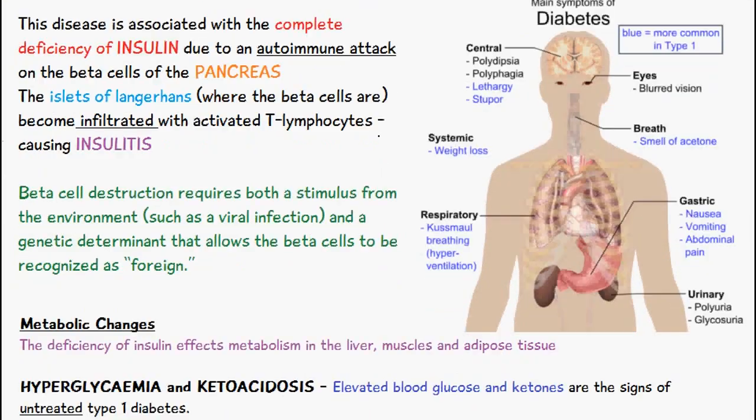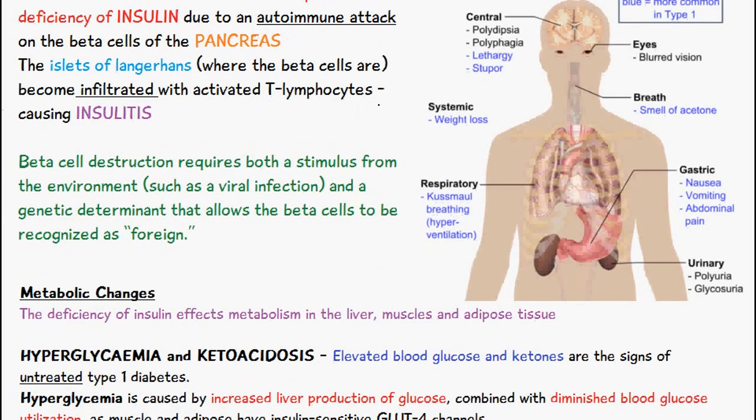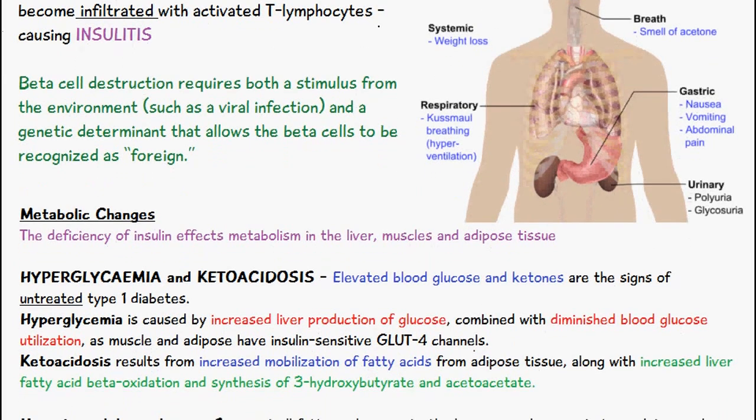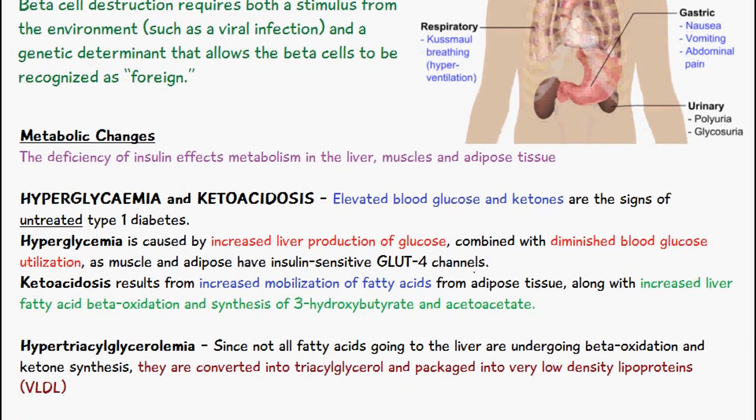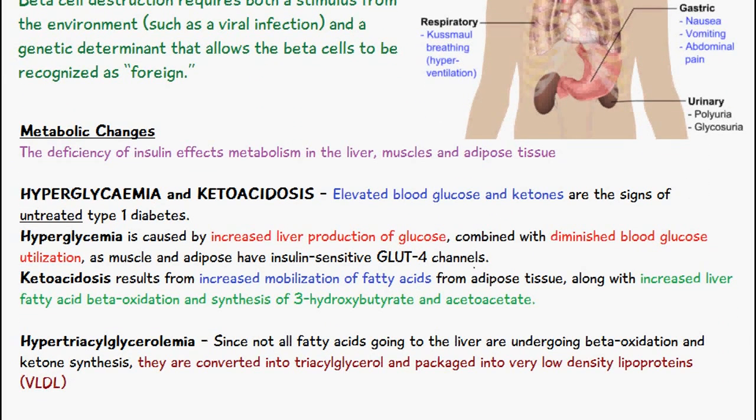The metabolic changes associated with a deficiency of insulin — since insulin is such an important hormone, the lack of insulin within the human body will obviously cause effects on metabolism. The main organs or tissues responsible are the liver, muscles, and adipose tissue.